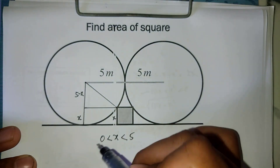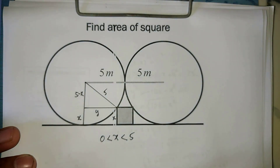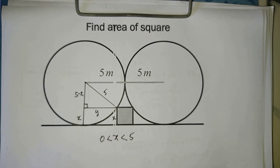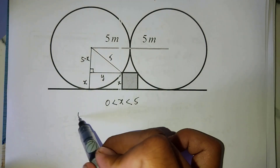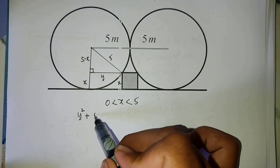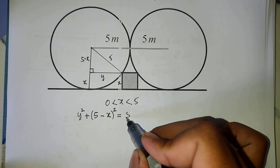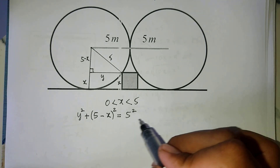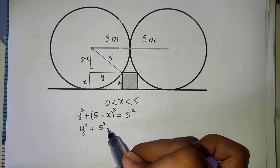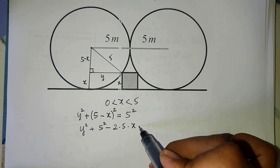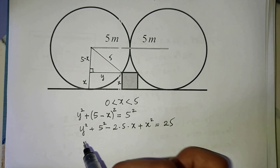Now we get a right triangle. We apply the Pythagorean theorem: y squared plus (5 minus a) all squared equals 25. We expand this to get y squared plus 25 minus 2 times 5 times a plus a squared equals 25.